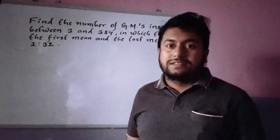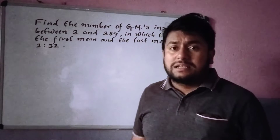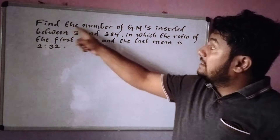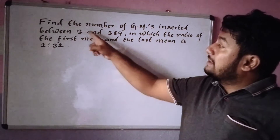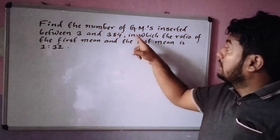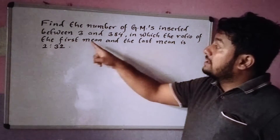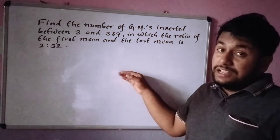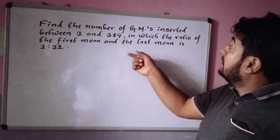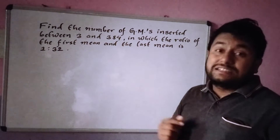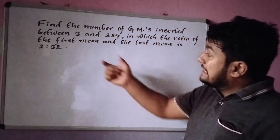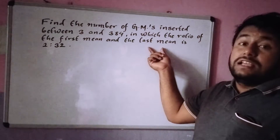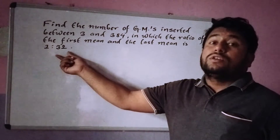Hello, welcome to the YouTube channel. Today we will talk about sequences and series questions. Find the number of geometric means inserted between 3 and 384, in which the ratio of the first mean and the last mean is 1 to 32.